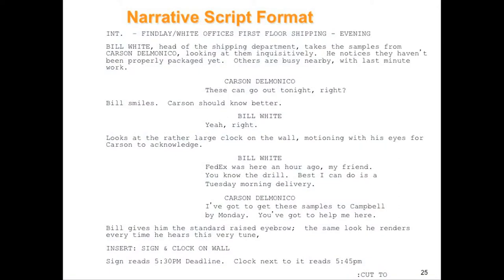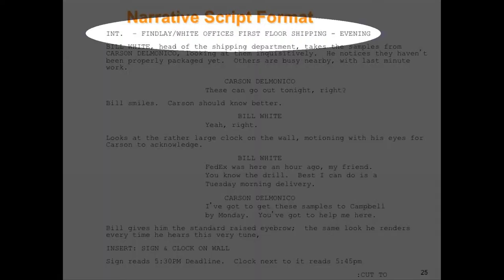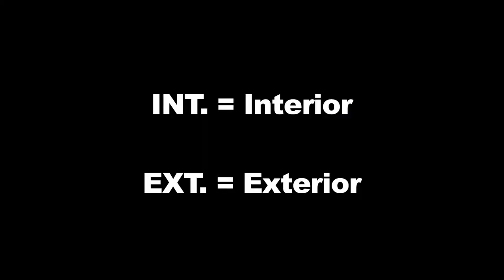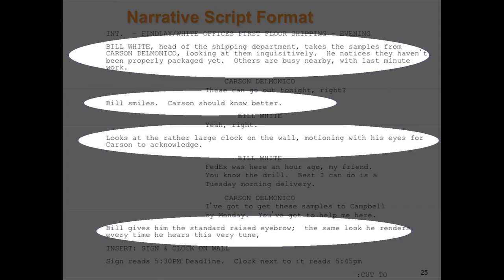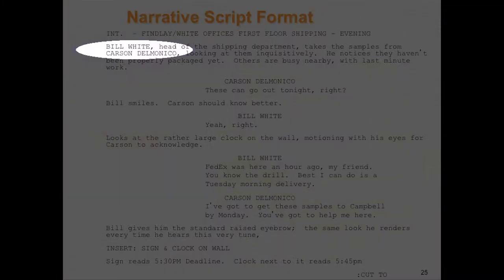This is an example of a narrative master scene script formatted page — the type of script you're going to most often write in this class. The scene heading, or slug line, provides information about the location and time of day. Scene headings always start with INT for interior or EXT for exterior. Next are the action blocks, where the visual and audio descriptions are written. Action blocks describe only the actions performed by the actors.